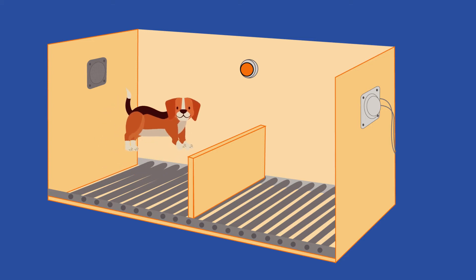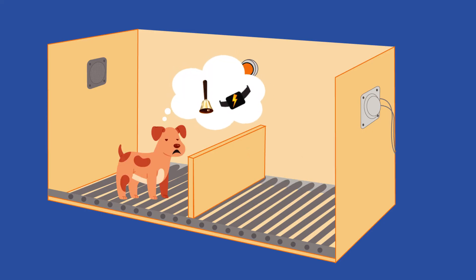Seligman brought in a new set of animals and found that dogs who had not experienced the first classical conditioning would always jump over the fence. He concluded that the original set of dogs had learned to be helpless. They had no control in the first half of the experiment, so they assumed they would never have control. They believed there was nothing they could do to avoid the shocks, even when there was a clear option they could take to do so.